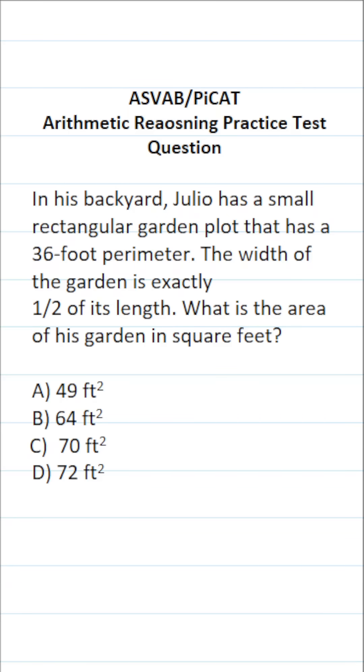This arithmetic reasoning practice test question for the ASVAB and PICAT says, in his backyard, Julio has a small rectangular garden plot that has a 36-foot perimeter. The width of the garden is exactly one half of its length. What is the area of his garden in square feet?